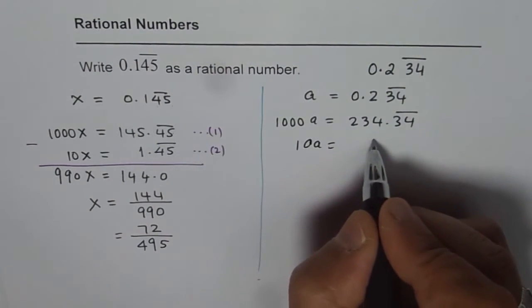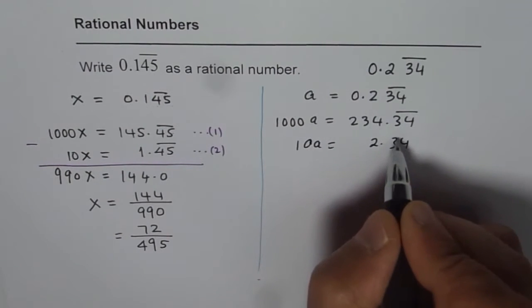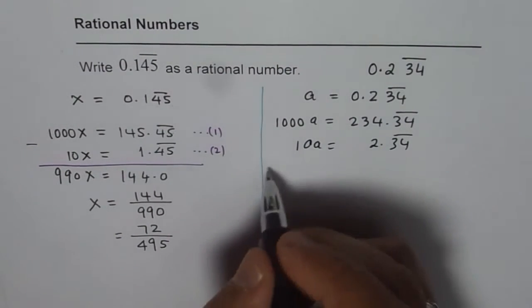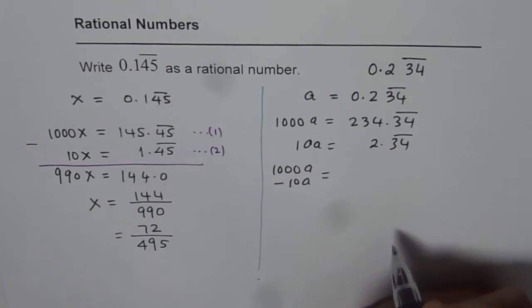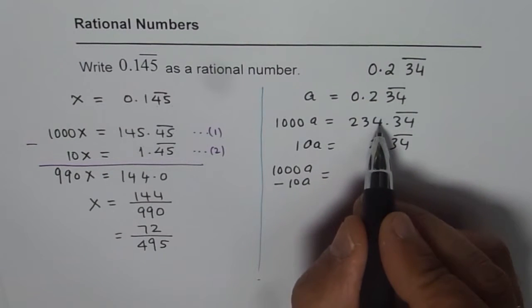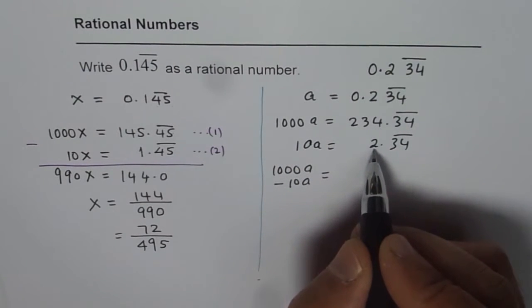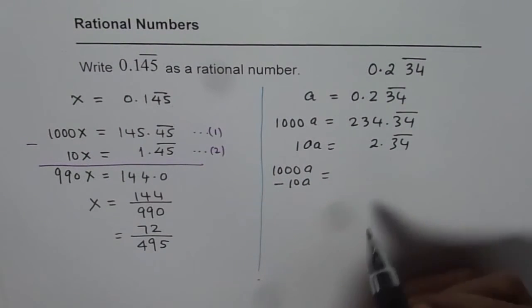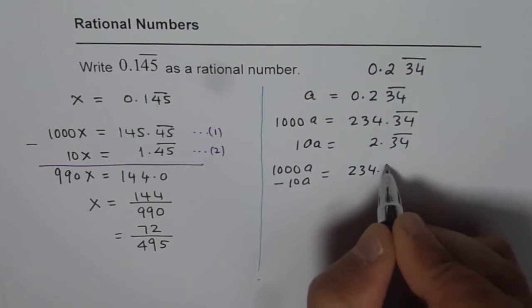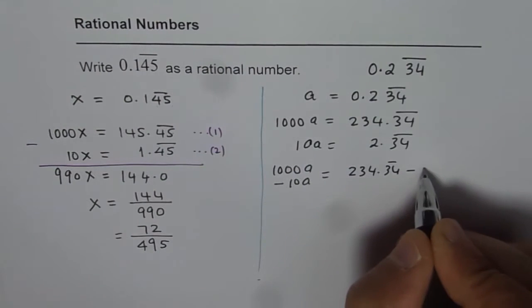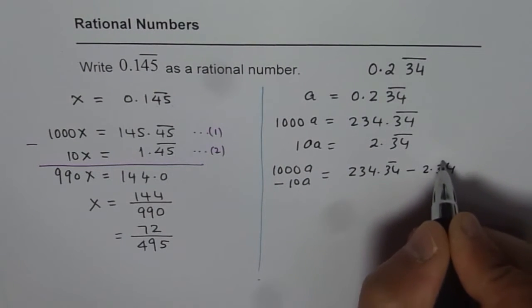And if I take away 1000A minus 10A, what do I get? I get 990A. 234 take away 2, 0.34, 0.34 cancel out. I get 234.34 recurring take away 2.34 recurring.